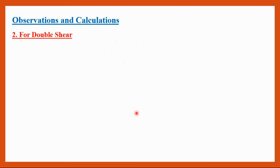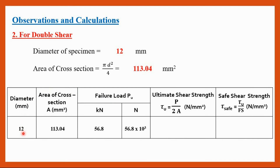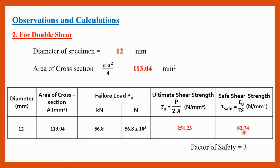Now observations and calculations for double shear. The same specimen is used with a diameter of 12 mm. Area is 113.04 mm square. The specimen has taken a maximum load of 56.8 kilo Newton, which in Newton is 56.8 into 10 raised to 3. This load divided by the cross sectional area gives the ultimate shear strength as 251.23 Newton per mm square. With a factor of safety of 3, the safe shear strength is 83.74 Newton per mm square for double shear.